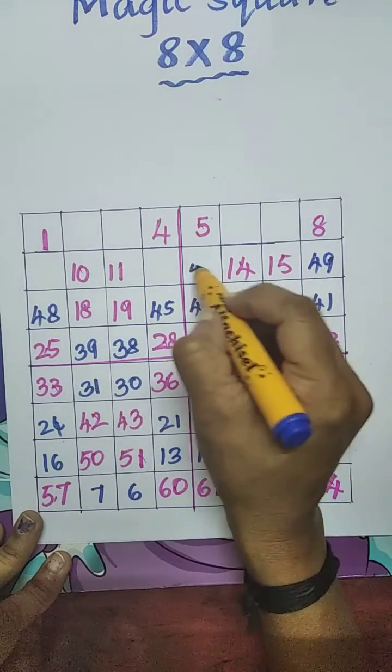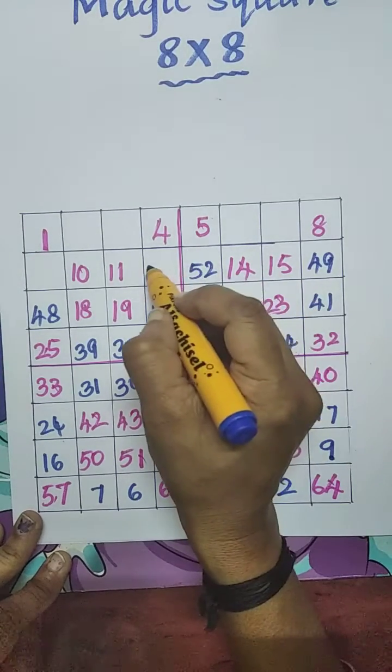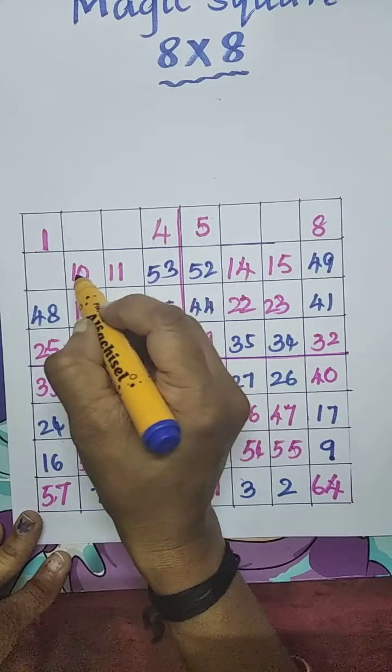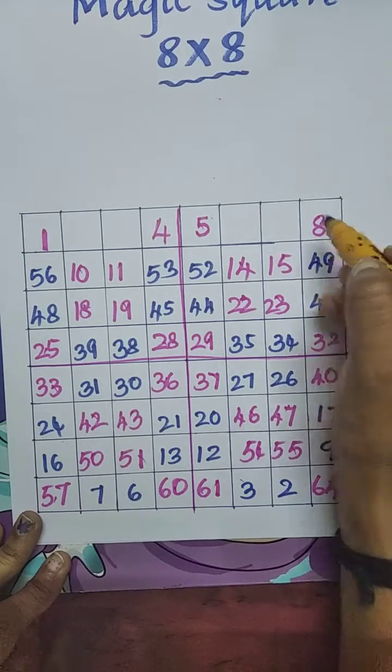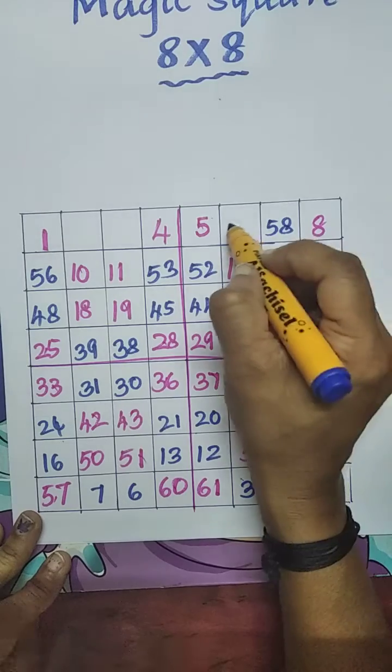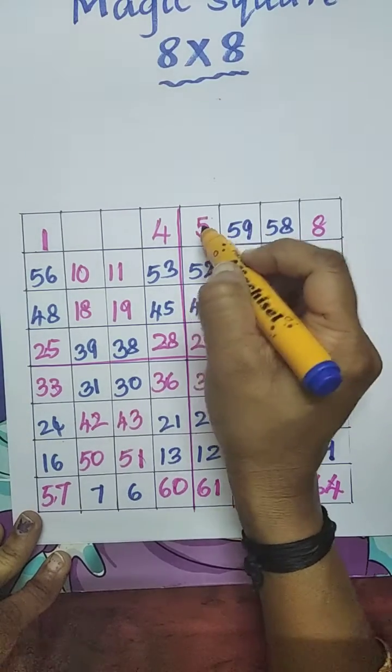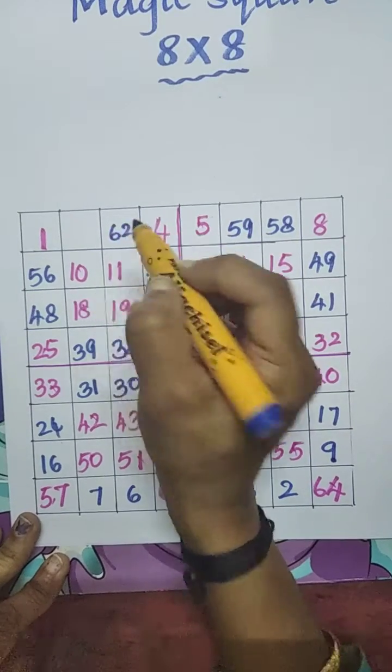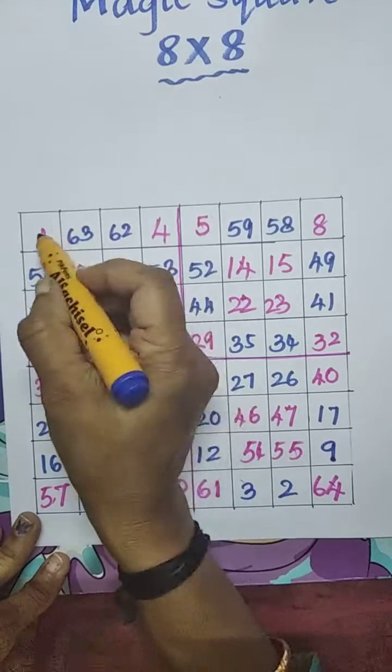50, 51, 52, 53, 54, 55, 56, 57, 58, 59, 60, 61, 62, 63, 64.